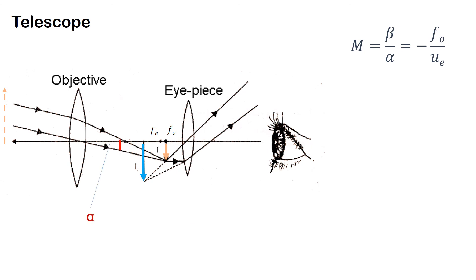We use the angle subtended by the object and the angle subtended by the image to find the magnification. This is the image triangle.